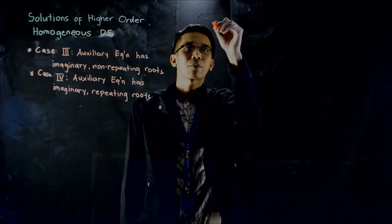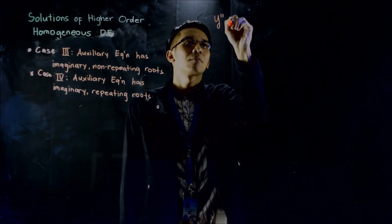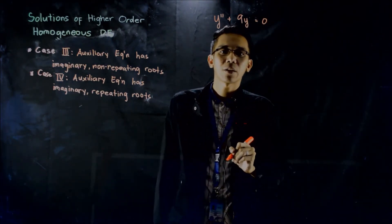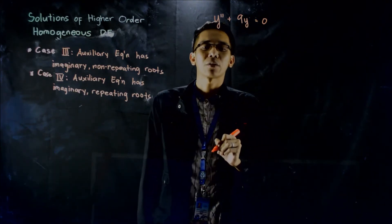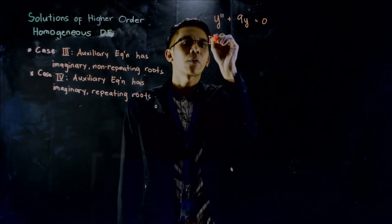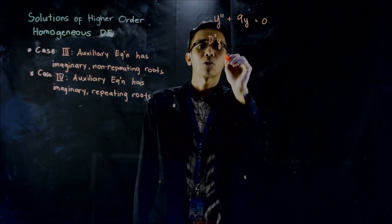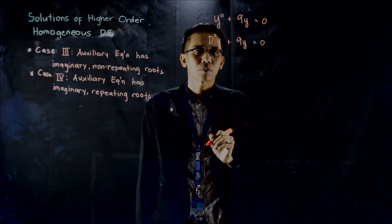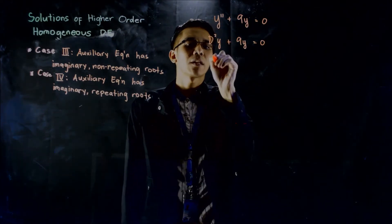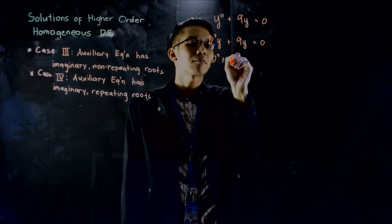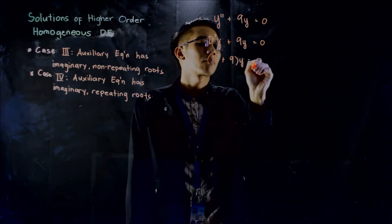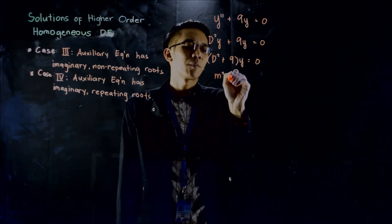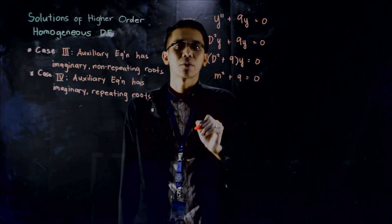Let's try to solve y double prime plus 9y equals 0. This differential equation, using our operator notation, is equivalent to the second derivative of y with respect to x plus 9y equals 0. Factoring all the y's, we have d squared plus 9 times y equals 0, giving us an auxiliary equation: m squared plus 9 equals 0.